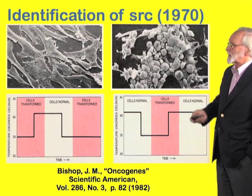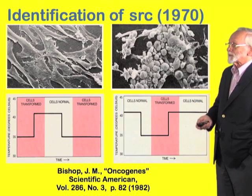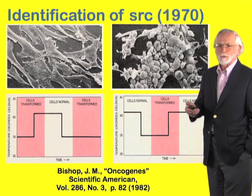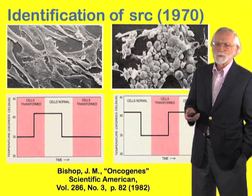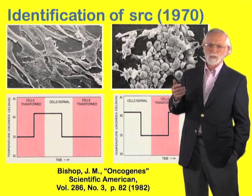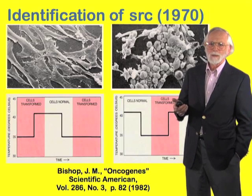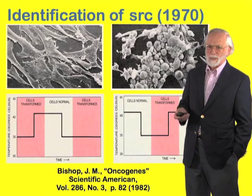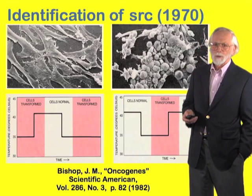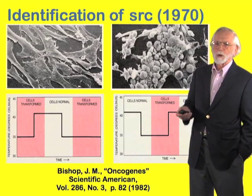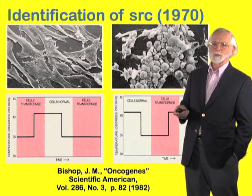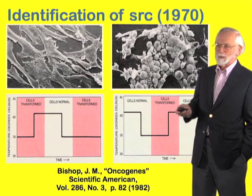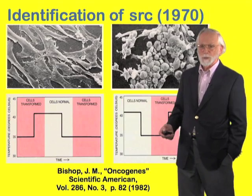You could cycle the cells back and forth between the transformed and the normal state just by shifting the temperature. To a geneticist, this meant that there was at least one gene clearly responsible for eliciting the neoplastic transformation. We came to call these genes oncogenes, and the gene in Rous's sarcoma virus was dubbed SARC because it elicits sarcomas.